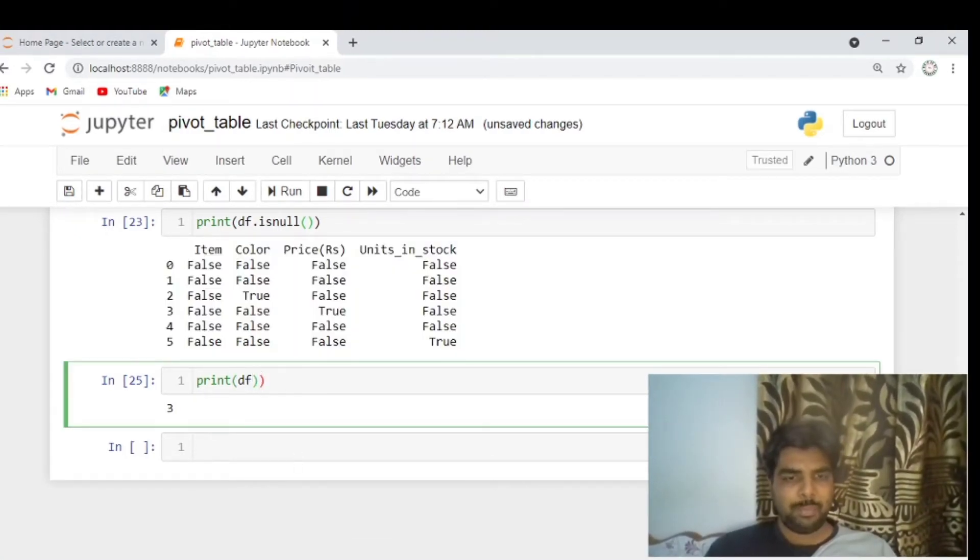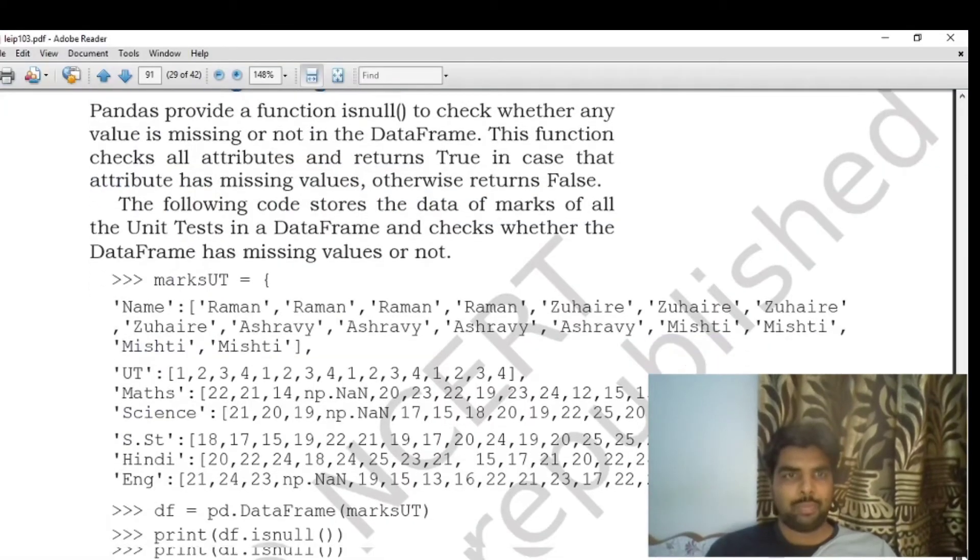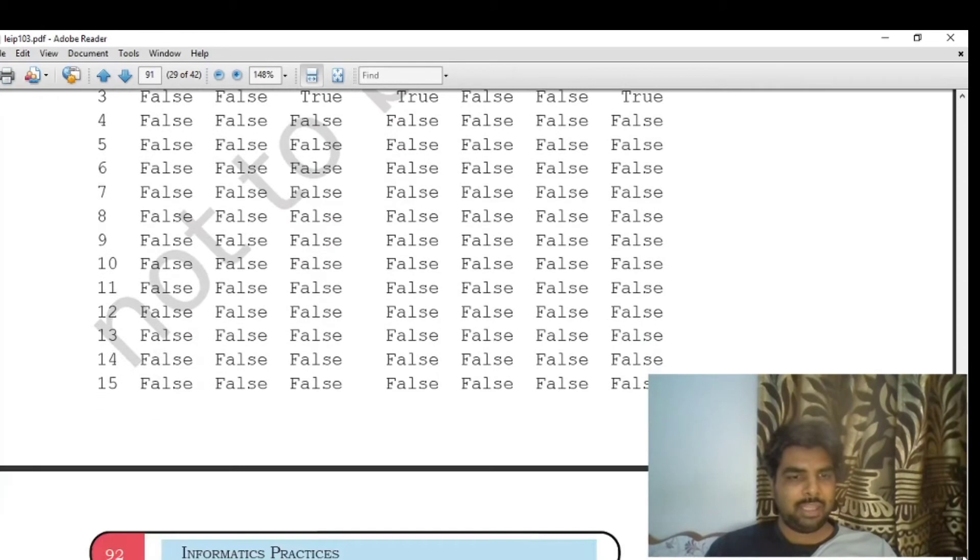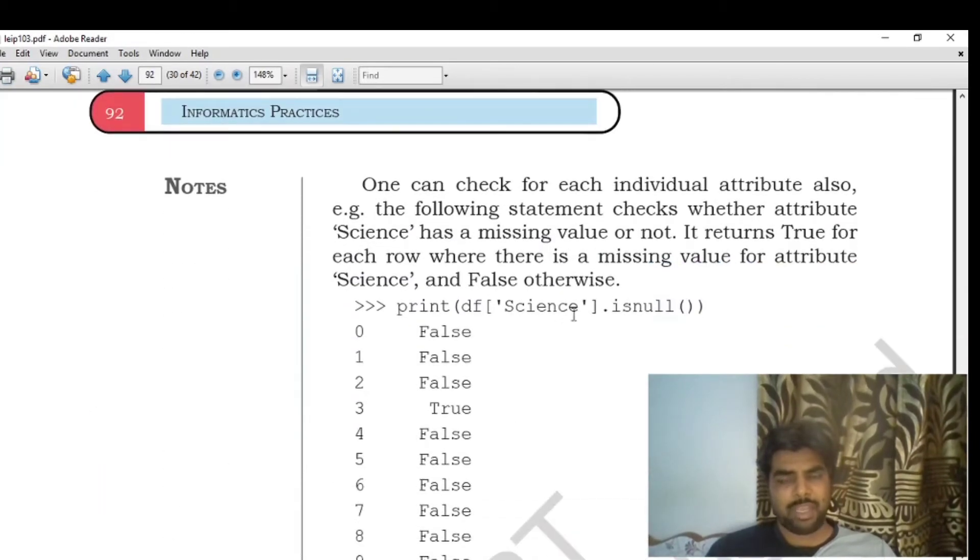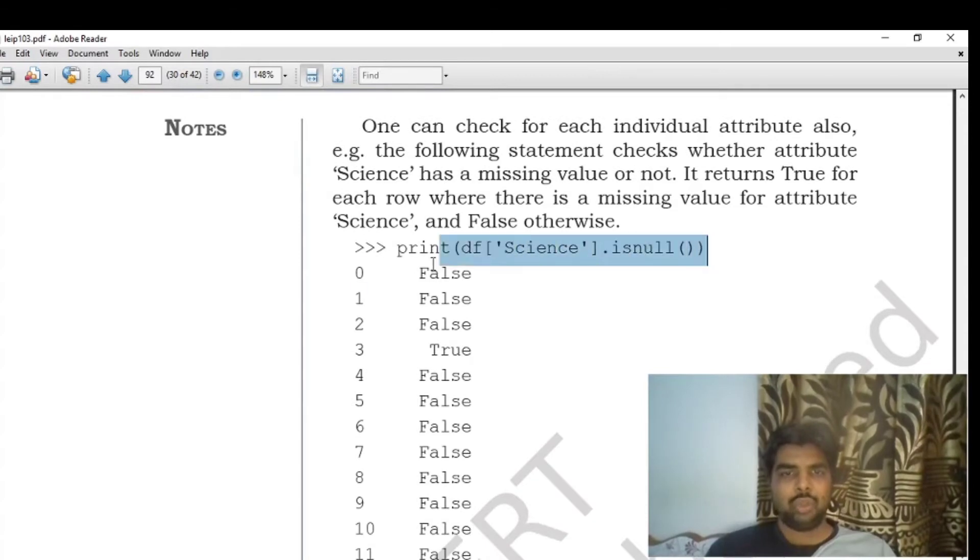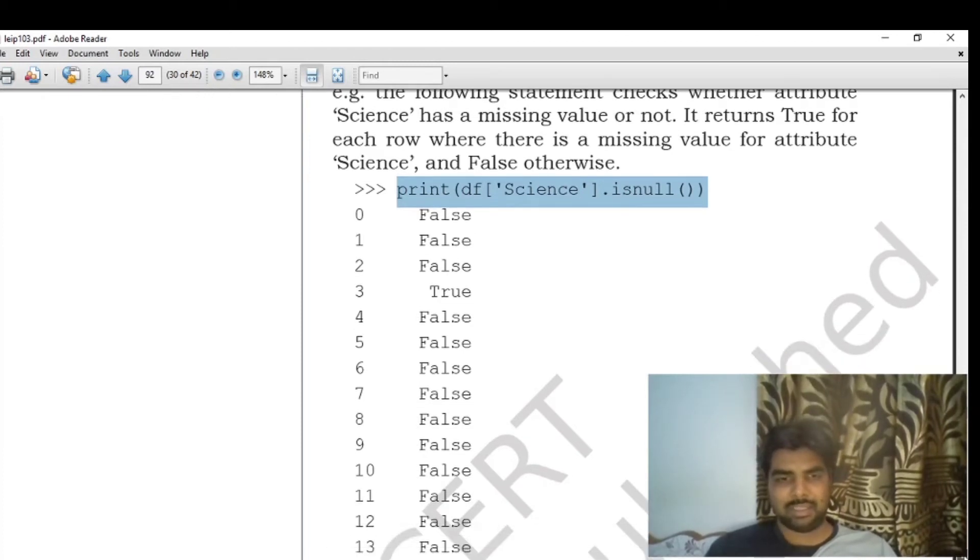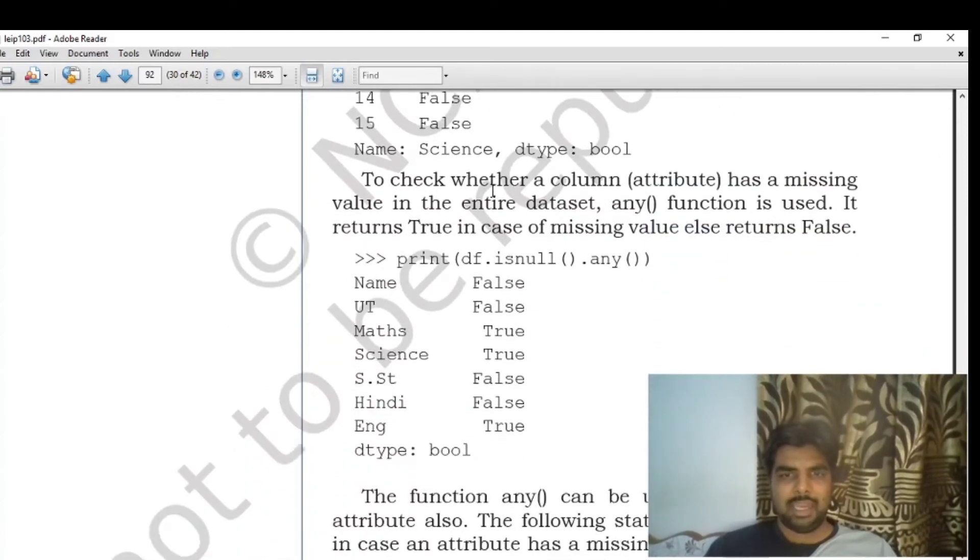We can check that if we can type is_null and any, we get true for columns with missing values and false for columns without missing values. If we match everything and find no missing values, it will be false.